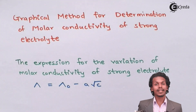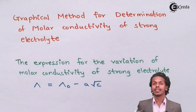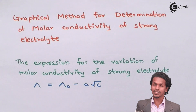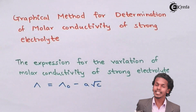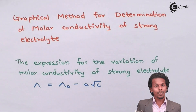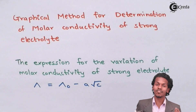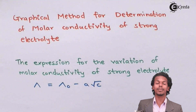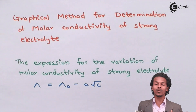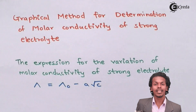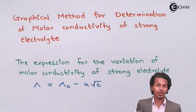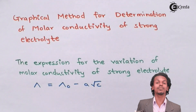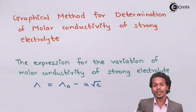We should know that the molar conductivity will increase if there is a decrease in the concentration, or when there is an increase in dilution. For a strong electrolyte, when we determine the molar conductivity, the value will increase — we will see an increase in the molar conductivity of a strong electrolyte.